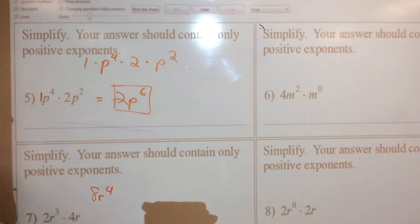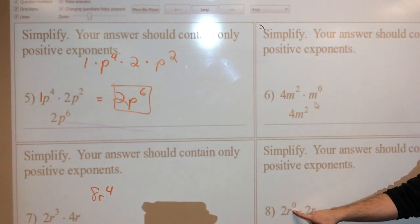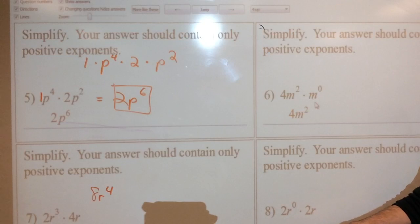Let me go ahead and give you the answers for this. 4M to the 2nd because M to the 0 power is just 1. And then R to the 0 power is just 1, but that still remains a 2 here. So it's really 2 times 2R, and that's 4R.